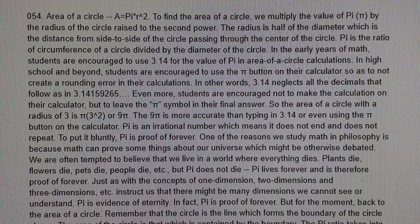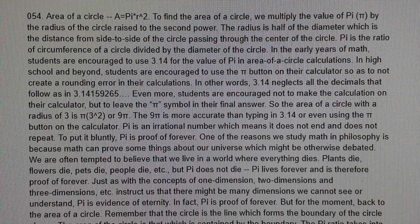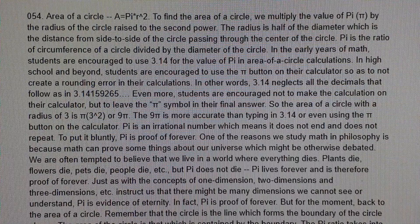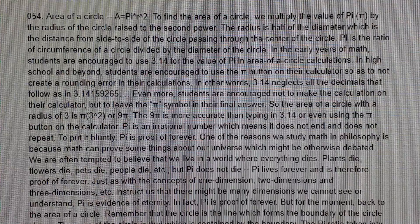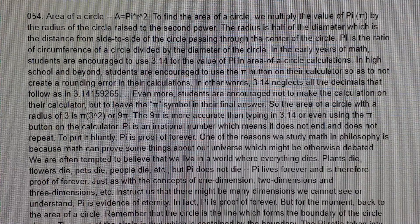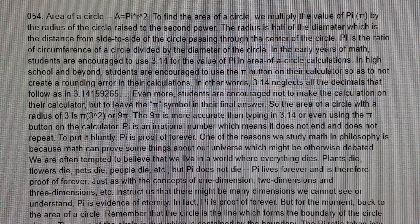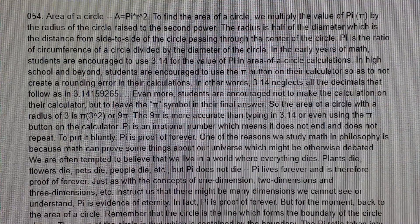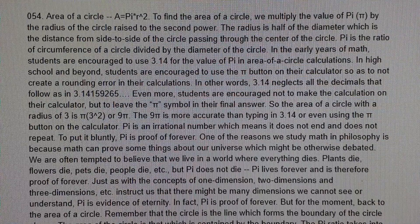So the area of a circle with a radius of 3 is pi times 3 raised to the power 2, or 9π. The 9π is more accurate than typing in 3.14 or even using the pi button on the calculator. Pi is an irrational number which means it does not end and does not repeat.